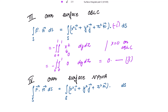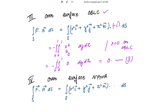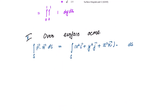Over the opposite surface with outward normal along the positive x-axis, n̂ = î, and ds = dy dz. On this surface x = 1, so the integrand is x² = 1. Solving this integral gives 1. Marking this as 4.